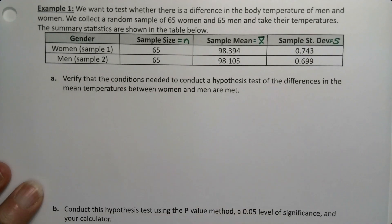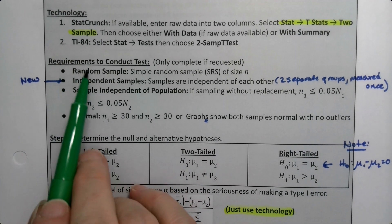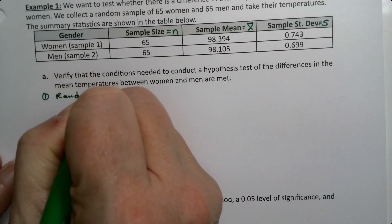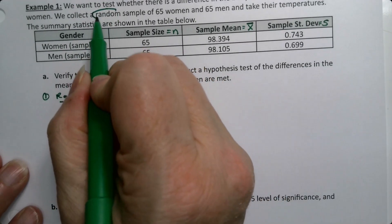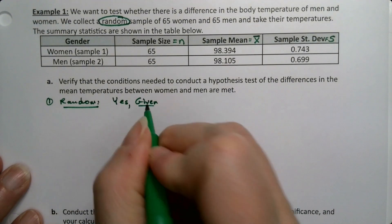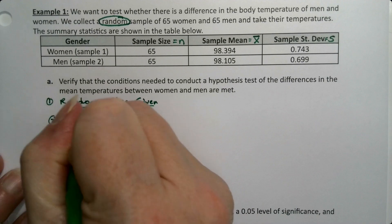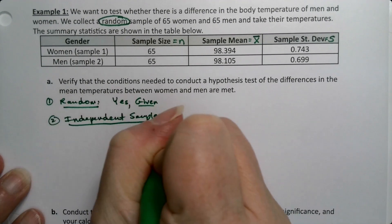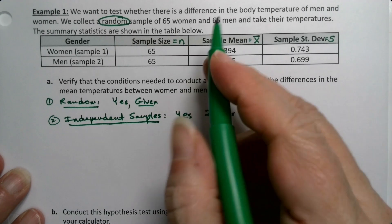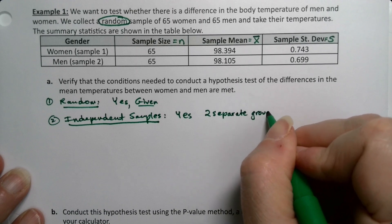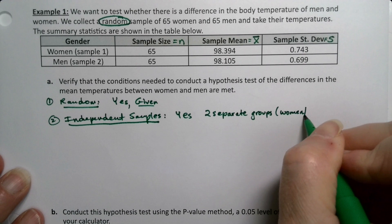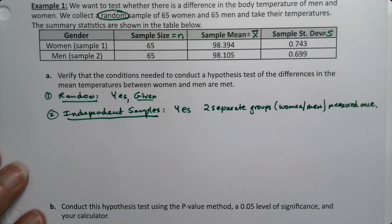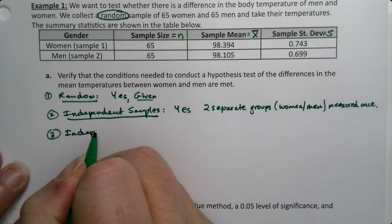Let's look at the requirements that we need, the conditions. We need random, so we're going to start with that. Number one, random is given. It said right here it was a random sample. Step two, independent samples. Well, that's yes also, because these are two separate groups, men and women, measured once.